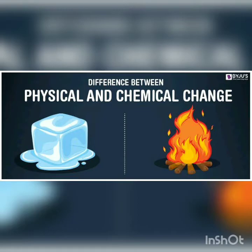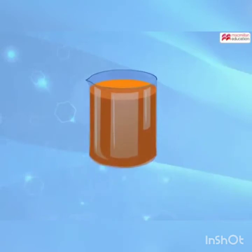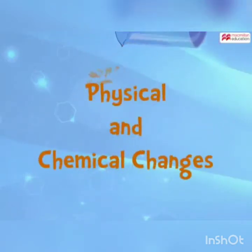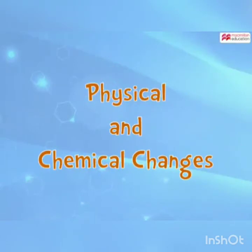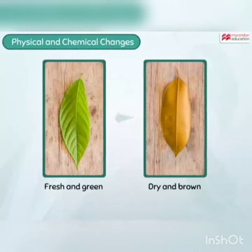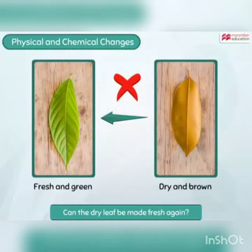Let us understand the difference between physical and chemical changes in a better way. Look at these leaves — the first leaf is fresh and green while the other is dry and brown. Can we make the dry leaf fresh again? Well, we cannot do so, and that is because the leaves have undergone a chemical change that cannot be reversed.